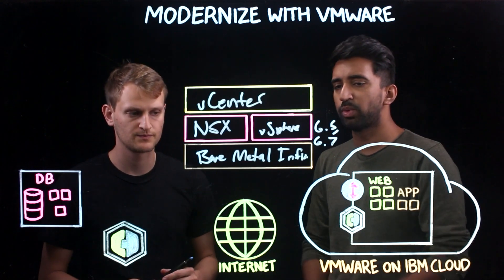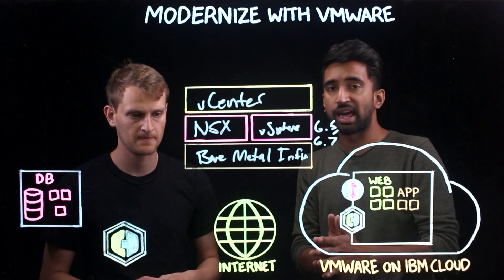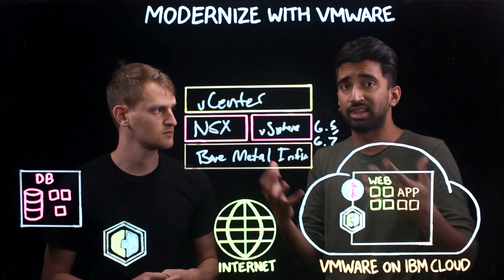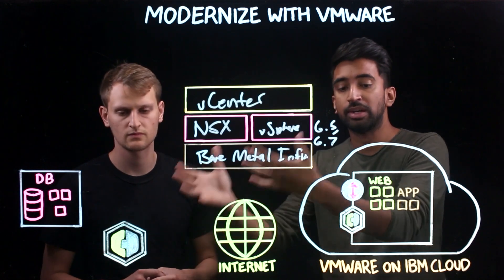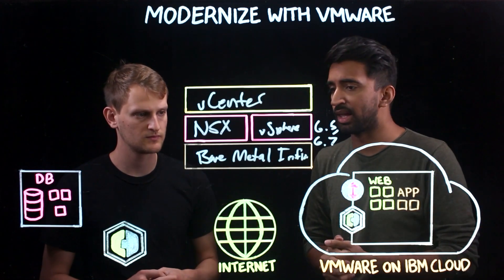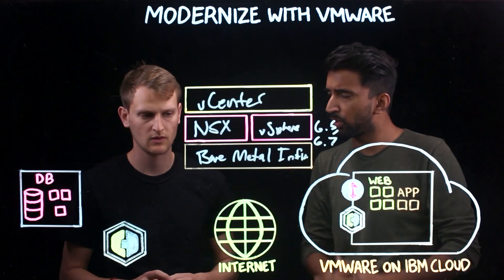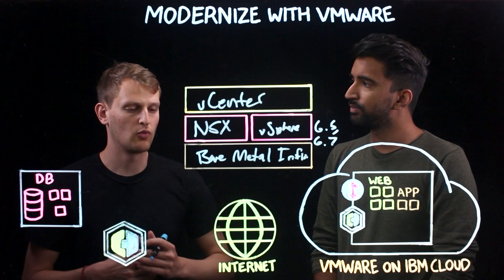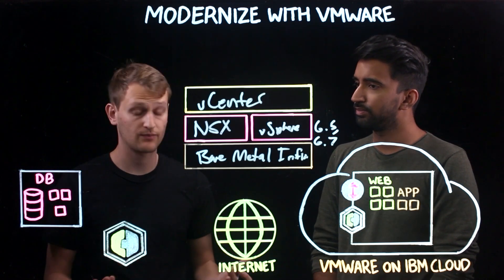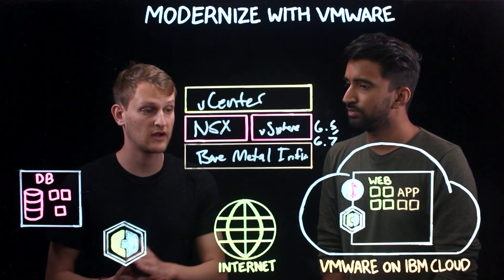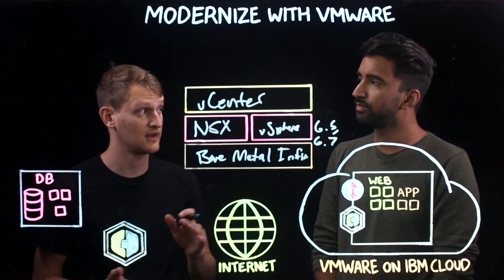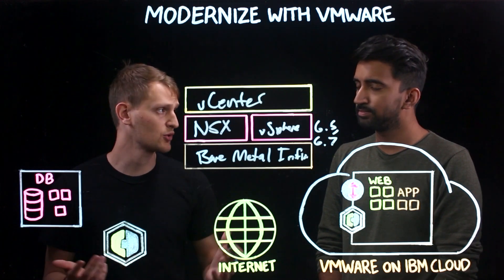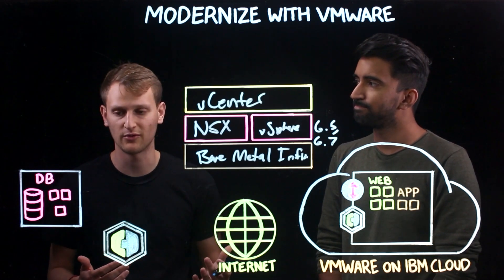We want to show how we modernize from legacy architecture and infrastructure to something like VMware on IBM Cloud. One specific use case is modernizing from legacy hardware and legacy software, and calling out VMware HCX. HCX is a migration, hybridity, and modernization tool — whatever acronym you want to put with that.